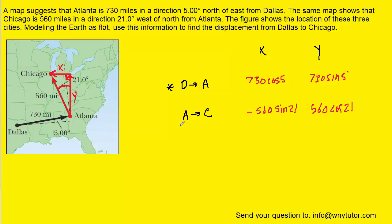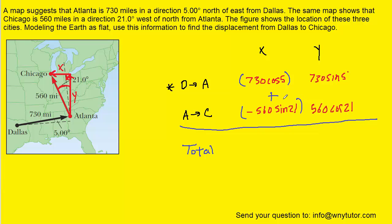Now that we have filled in our chart, the next step is to find the total X and total Y components of the displacement. All we do is add the two X components together, and do the same for the Y components. Make sure your calculator is set to degree mode. Adding the X components gives about 526.5, and adding the Y components gives roughly 586.4.